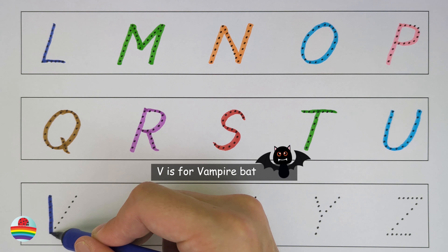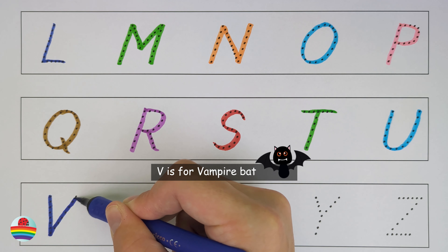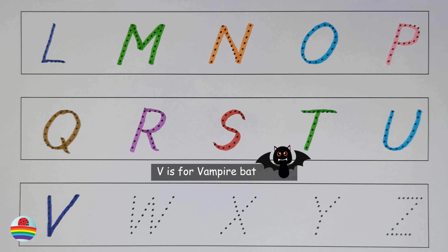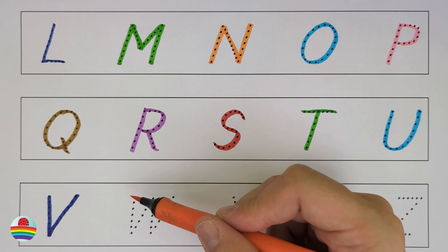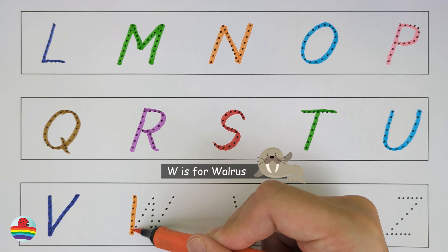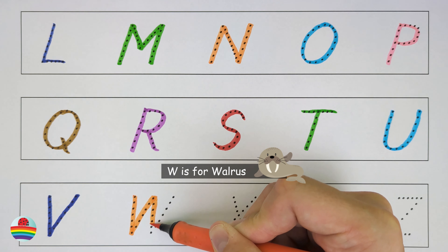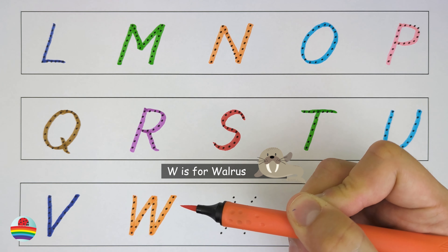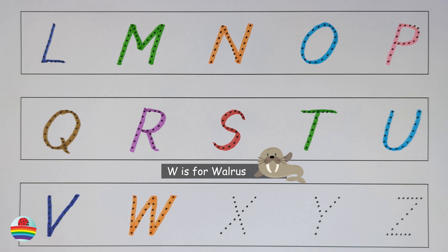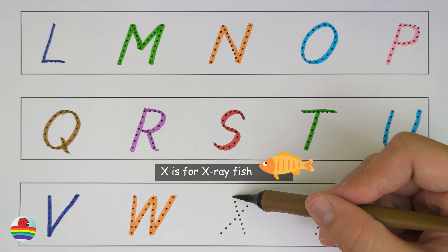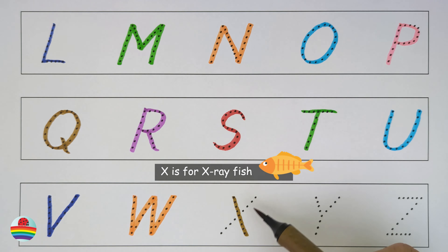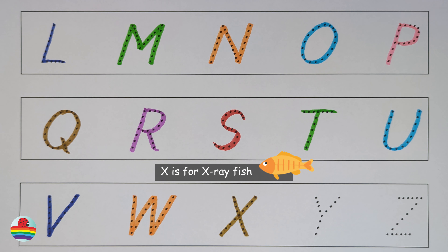V. V is for vampire bat. V. W. W is for walrus. W. X. X is for x-ray fish. X.